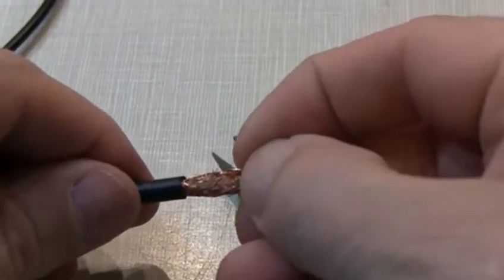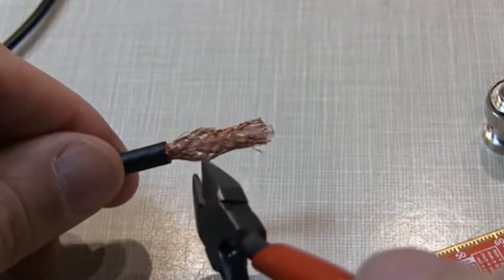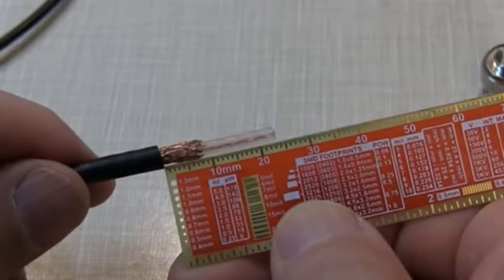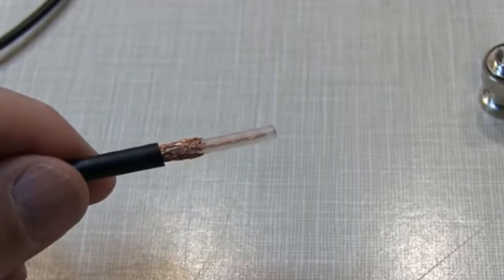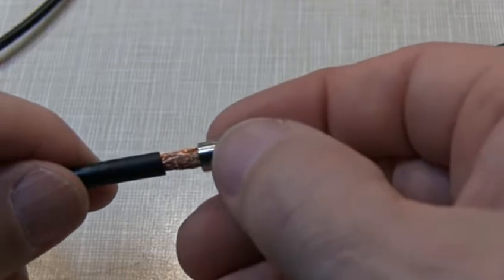Now I'll typically fan the braid out like this, then carefully use a pair of diagonal cutters and trim all the way around. Well, that's not too bad. Now's a good time to slip the compression ferrule over the end of the coax and get it down out of your way.